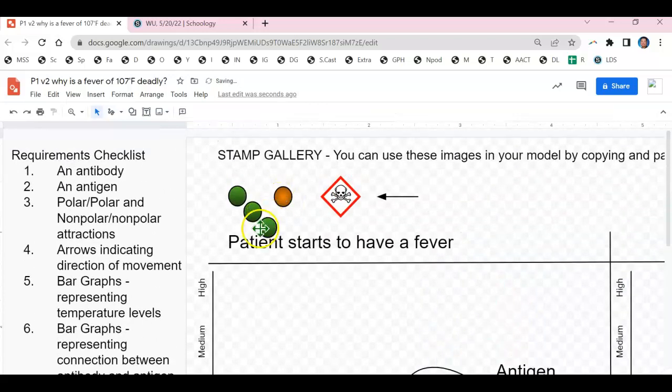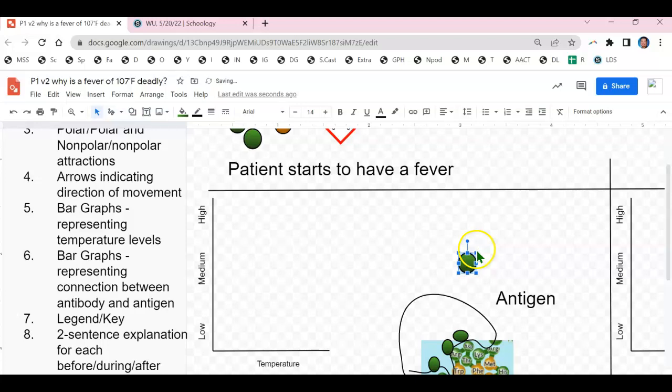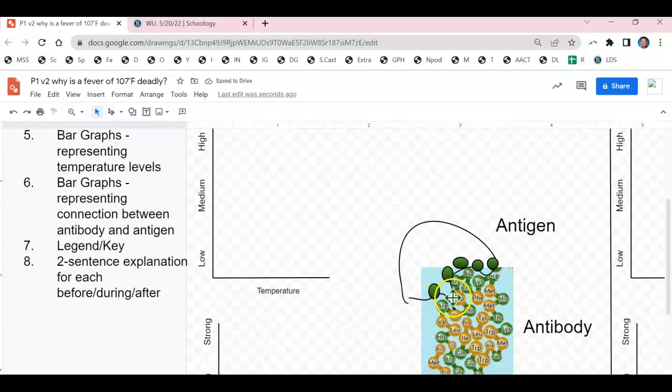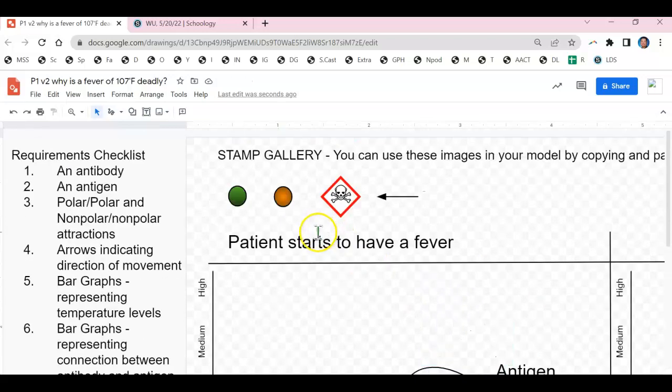And I'm only going to do the bottom half of the antigen because that's what needs to be focused upon, not the antigen in its entirety. And there's one nonpolar amino acid that will attract the nonpolar region of the antigen.